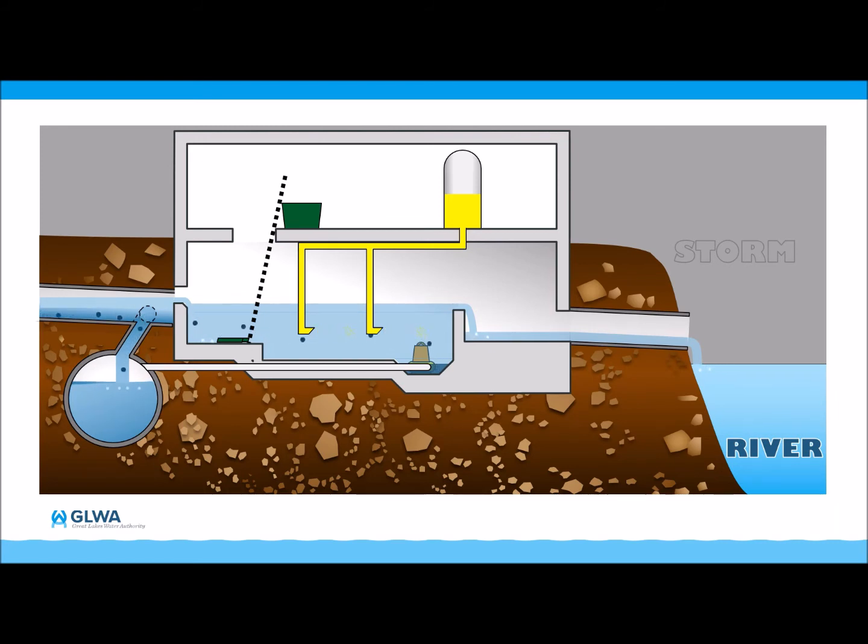In accordance with our National Pollutant Discharge Elimination System or NPDES permit, which is issued by the State of Michigan, we measure the volume of discharge for reporting purposes. This is accomplished by knowing the velocity of the flow and the level of the combined sewer overflow in the channel.